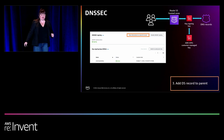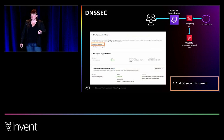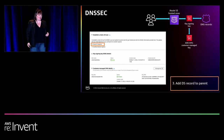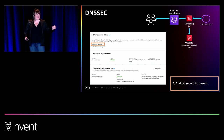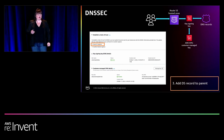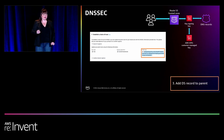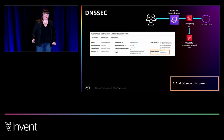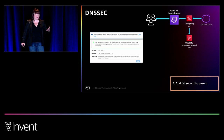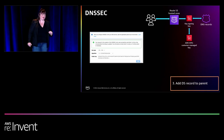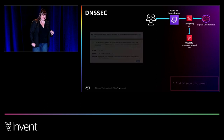The next step is where we add the DS record — the delegation signing record — to the parent. We're establishing a chain of trust. The DS record needs to be kept at the top-level domain. In the case of unicornpacket.com, the top-level domain is .com, and that's the parent. So the DS record is pushed to .com. You take a copy of the public key, select manage keys, select the correct key type and algorithm, paste the public key back in — and at that point, DNSSEC is implemented.